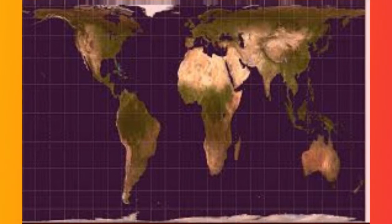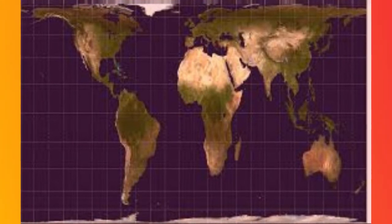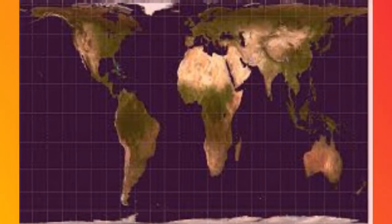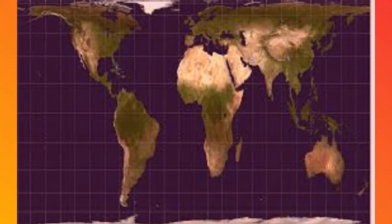Maps not only represent the world, they shape the way we see it. The Revolutionary Peters Projection Map presents countries in their true proportion to one another.